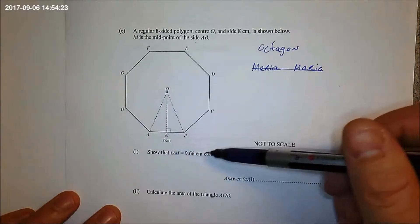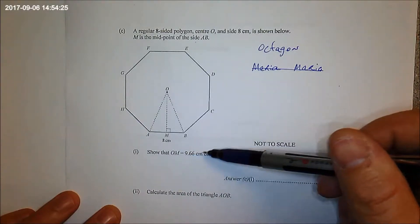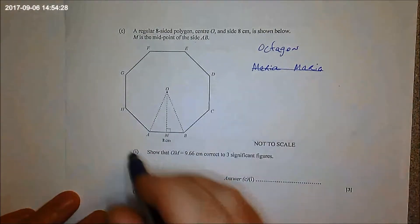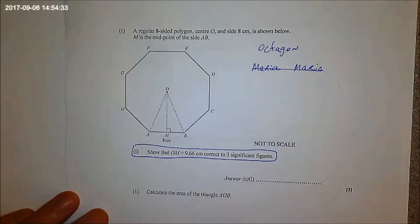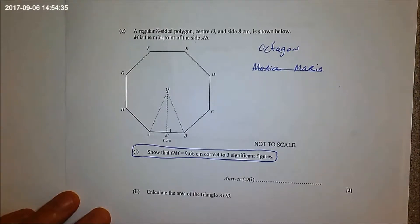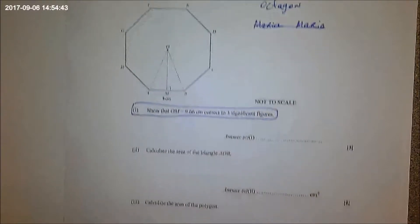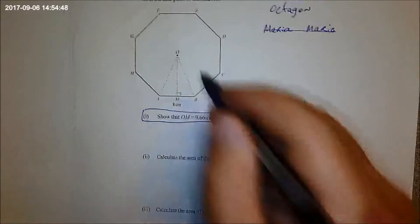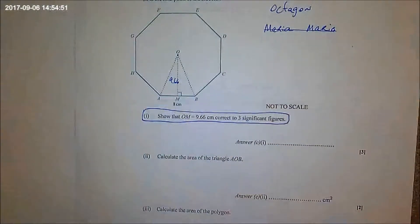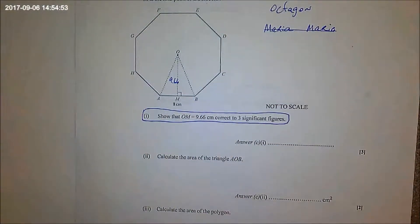So show that OM is 9.66 correct to three significant figures. Now this is the one that we actually don't know how to do yet. So that's the one that I took off of your test for you. Nobody knew how to do it. But we can do this one because it tells us that this is 9.66 and we have the base. Do you see? So what would the area of that triangle be?